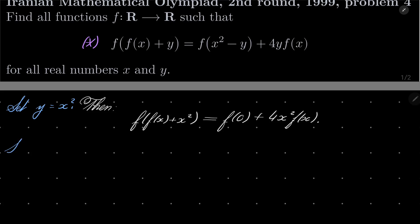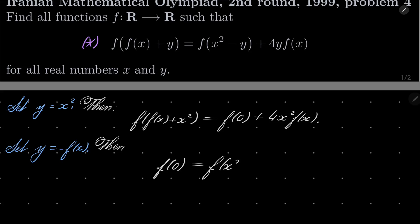Now let's try setting y to be minus f of x. This time we have f of 0 on the left-hand side, and on the right-hand side we have x squared plus f of x, or rather minus 4 f of x squared.